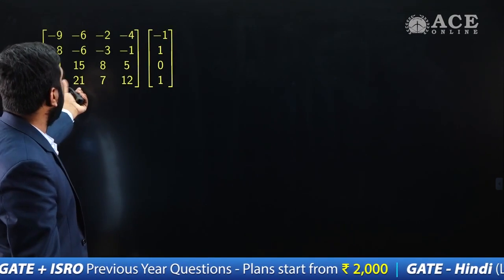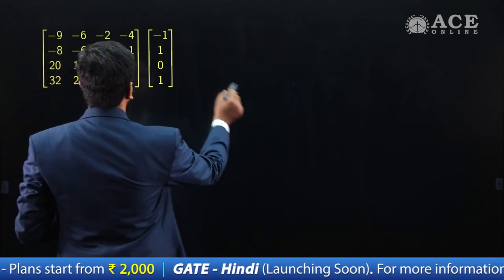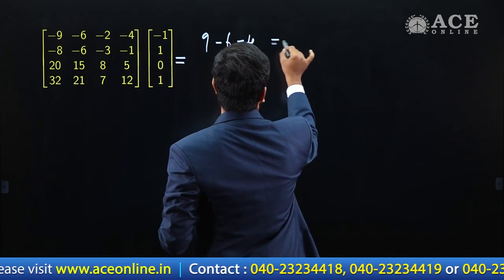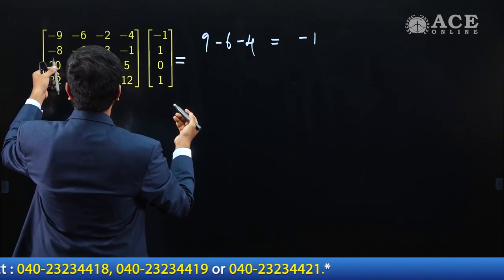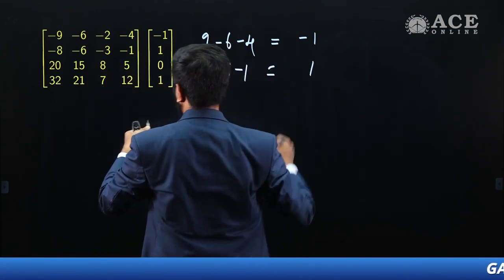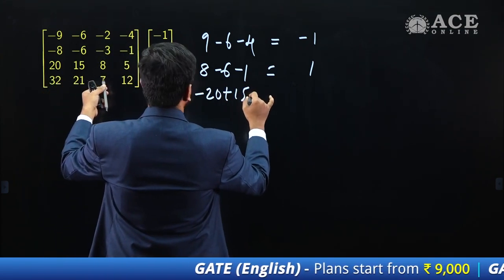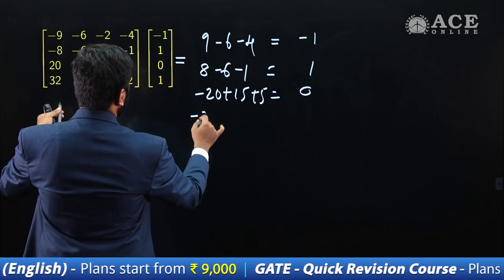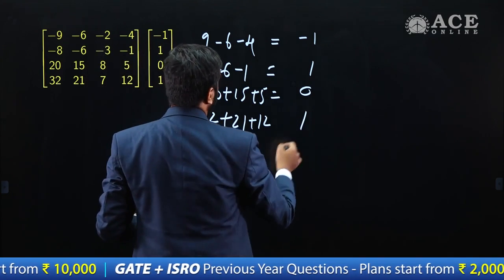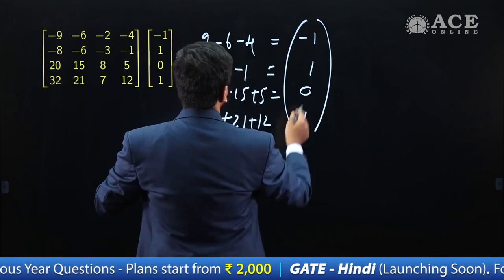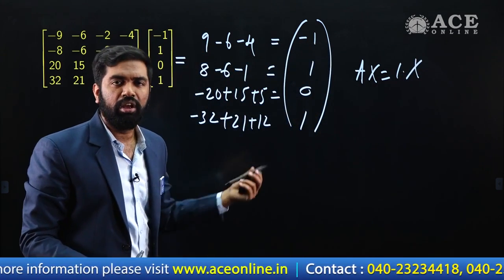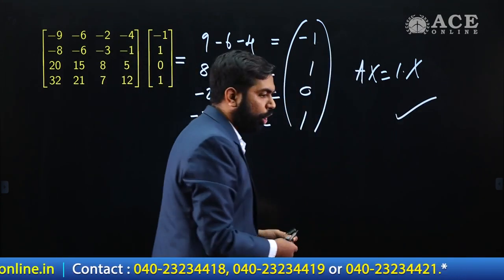Starting with option A: multiplying A by the given vector, I get [9−6−4, 8−7, −20+15+5, 33−32] after computing all rows. This gives [−1, 1, 0, 1] which is 1 times the original vector. So AX = 1·X, confirming option A is an eigenvector with eigenvalue 1.